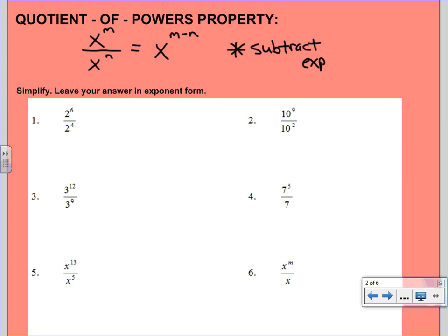These examples should go pretty quickly here. We can show you on the first one why this property works. So we'll first just show the property. So 2^6 over 2^4 would be 2^(6-4), and that would be 2^2. And notice we're leaving our answers in exponent form for these.